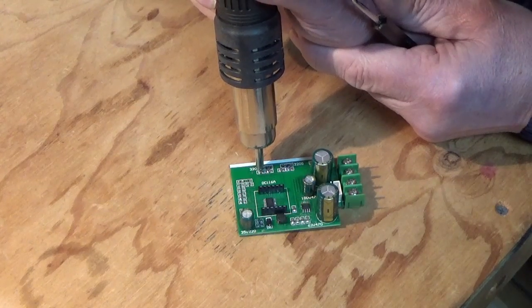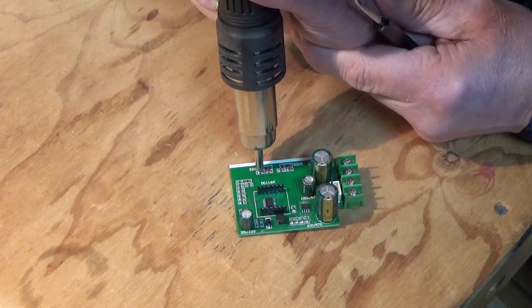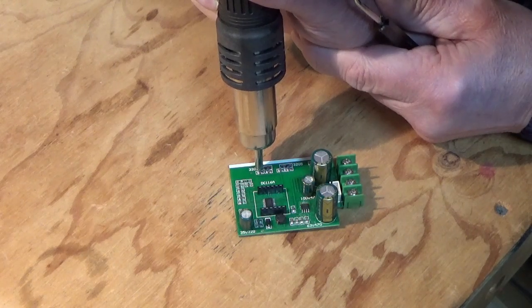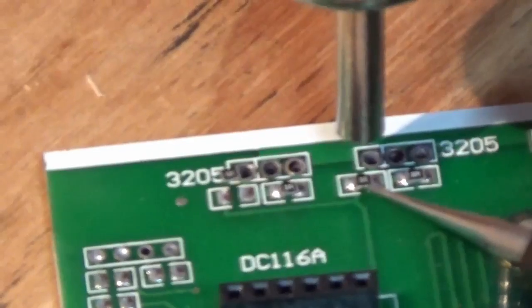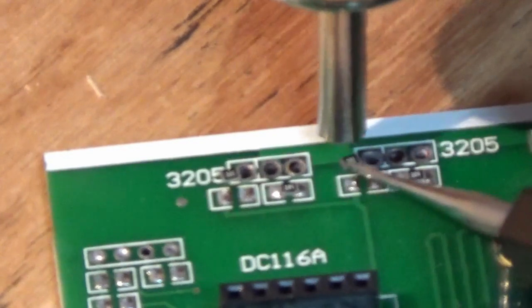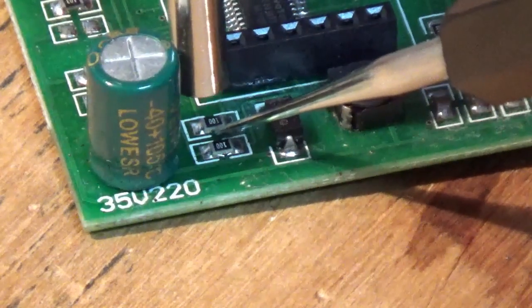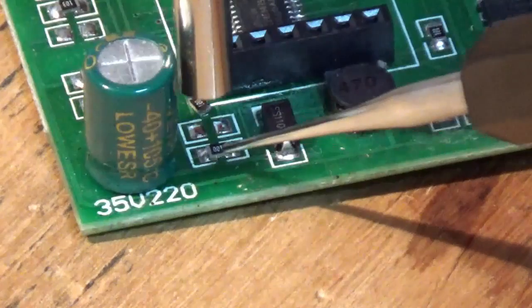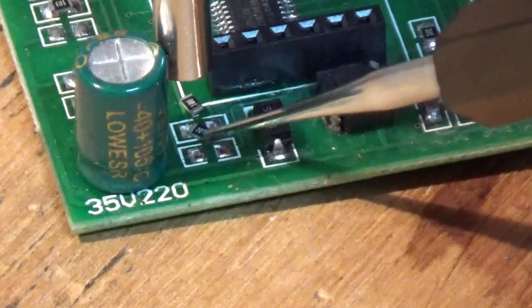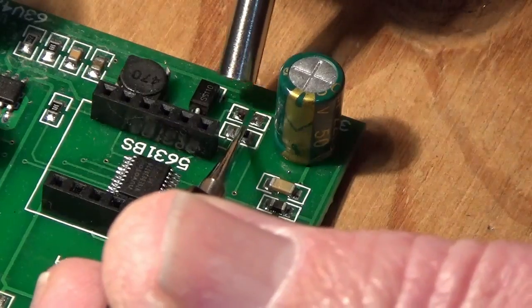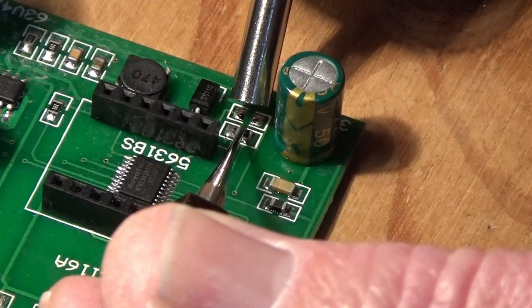So what I'm doing here is just using an air heat gun just to remove these resistors from the areas, and once we get that done then we'll swap them over and resolder them back on again.